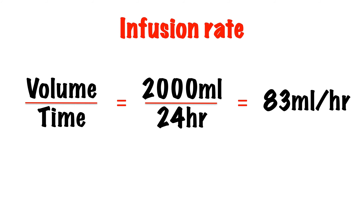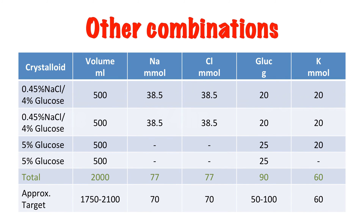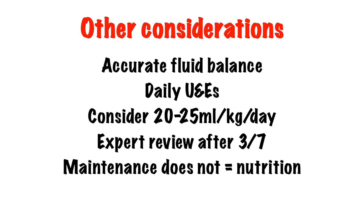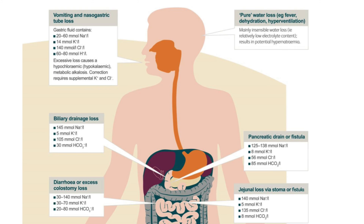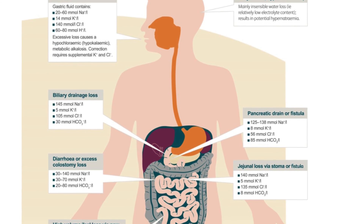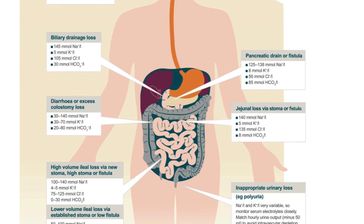What speed to give each bag at? Well, 2,000 mls in 24 hours works out at 83 mls per hour for each bag. We can achieve our daily target using any combination of the available crystalloids. An accurate fluid balance chart is needed so we know exactly what our patient is getting in terms of fluids, and these should be reviewed daily. Reduced volumes of 20 to 25 mls per kilo per day of maintenance fluid may have to be considered for more frail patients, patients prone to cardiac failure, or with renal dysfunction. No patient should be on a pure maintenance fluid for more than three days without an expert review. Remember that maintenance fluids do not provide nutrition. In addition to maintenance fluids, we should consider any additional losses that the patient may have and replace those, taking into account the contents of these losses.